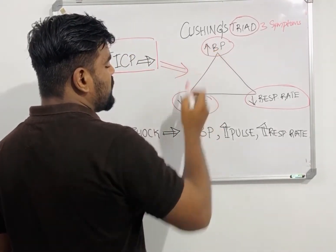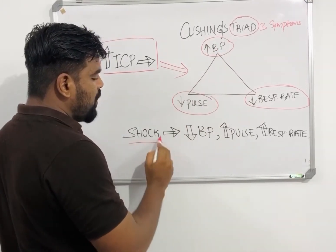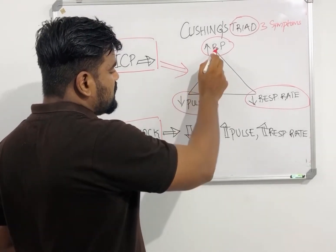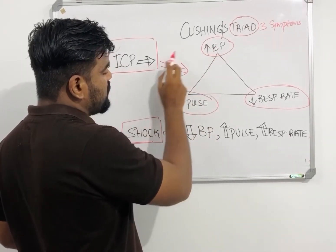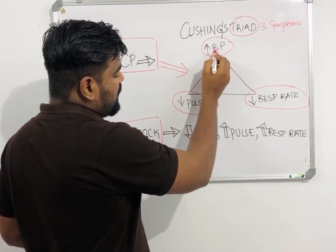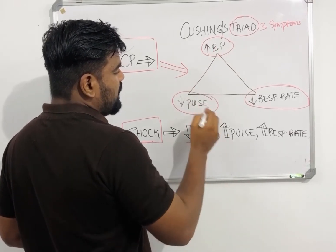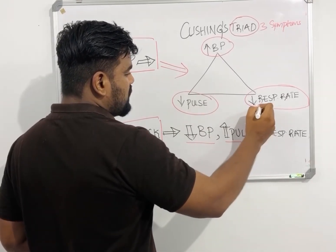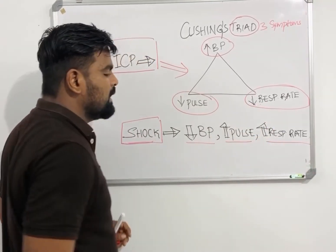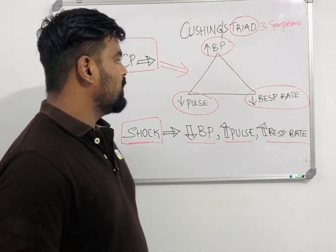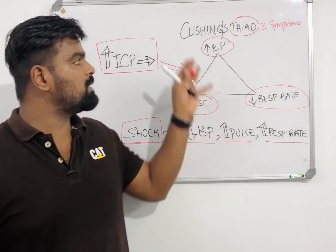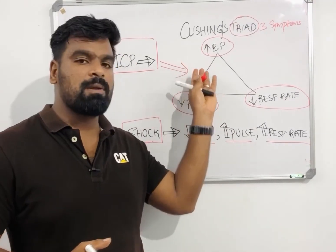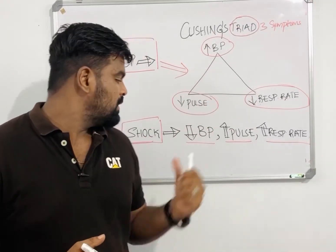If you know Cushing's Triad, it is easy to remember shock symptoms, because shock symptoms are just the opposite of Cushing's Triad. In Cushing's Triad you see high BP — in shock you see low BP. In Cushing's Triad you see low pulse — in shock you see increased pulse. In Cushing's Triad you see decreased respiratory rate — in shock it is increased. So if you know one, it is easy to remember the other.